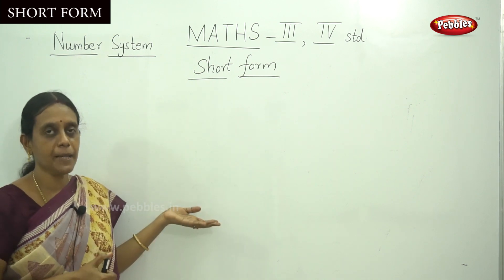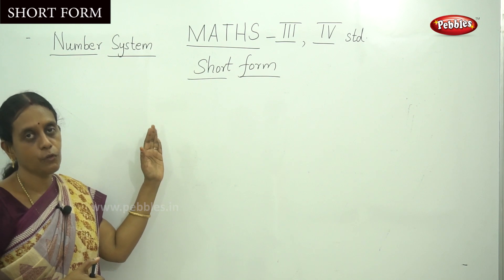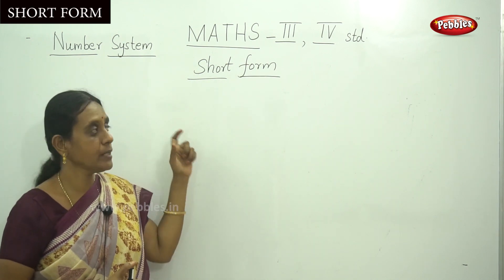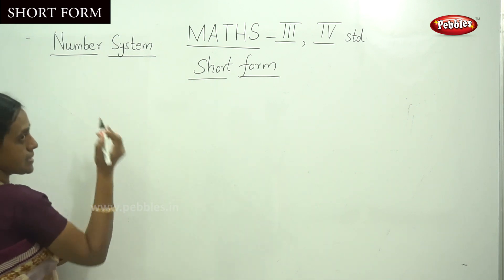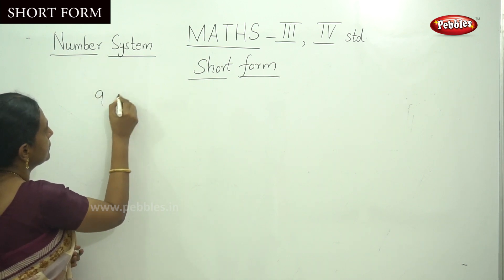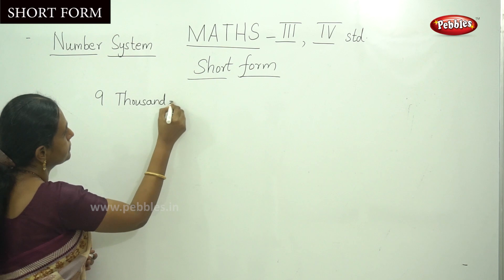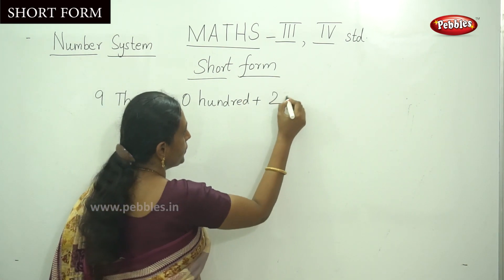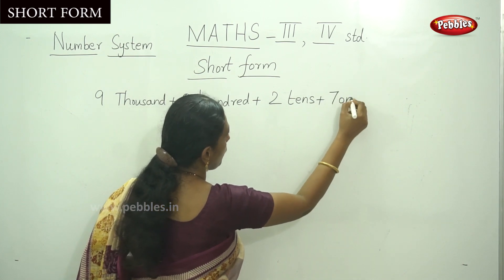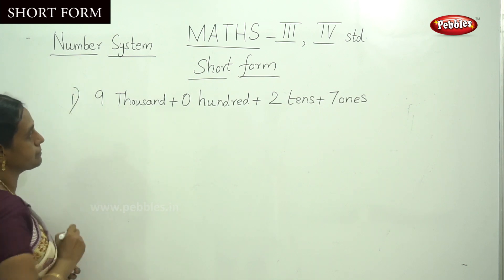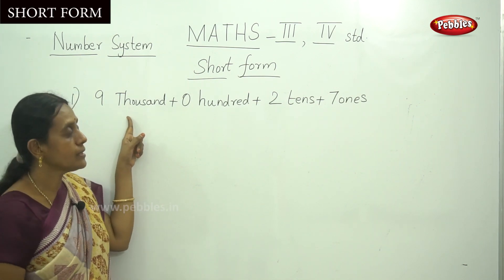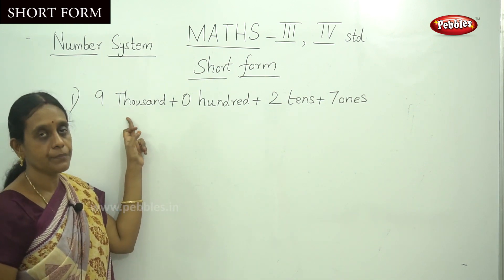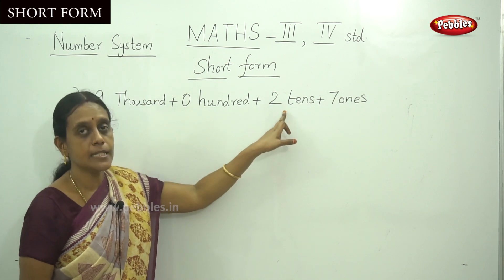Short form is a reverse method of our previous pattern. The question is in expanded format, so you have to write down the numbers and make it as a short form. I will explain with an example. That is the first sum — that is nine thousand plus zero hundred, plus two tens, plus seven ones. Nine thousand, zero hundred, two tens and seven ones.